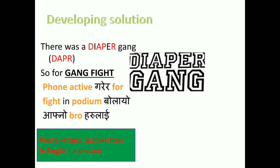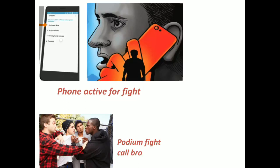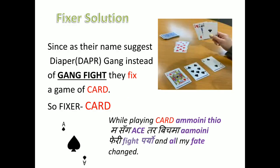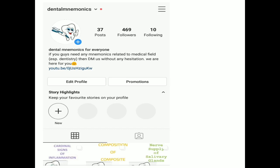Let me summarize briefly. For the developing solution, remember D-A-P-R (diaper). For the fixer, a game of card was fixed — C-A-R-D. Regarding ingredients: PH = phenidone and hydroquinone; activator uses Group 1 elements (sodium/potassium hydroxide); preservative = sodium sulfite; restrainer = potassium bromide. In CARD: C = ammonium thiosulfate; A = acetic acid; R = ammonium sulfite (preservative); D = ammonium sulfate (hardener).